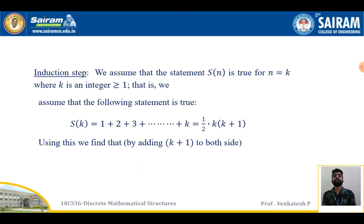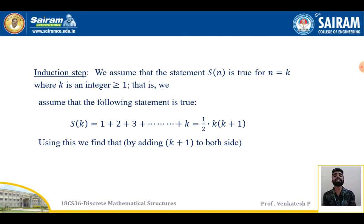Induction step: I'm going to assume the statement S(n) is true for n = k, where k is a positive integer greater than or equal to 1. Replacing n = k everywhere, we get S(k): 1 + 2 + 3 + ... + k = (1/2) · k · (k+1). Now I want to prove the statement S(k+1) is true — S(k+1) must satisfy this equation.